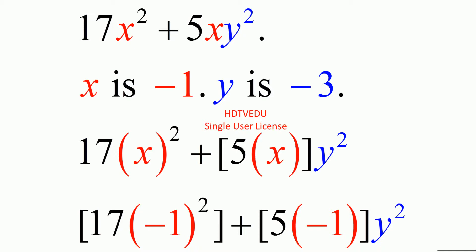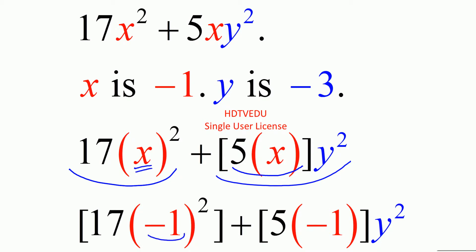We are told that x is negative 1 and y is negative 3, so we have 17x squared plus 5xy squared. What is x? X is negative 1. What is negative 1 to the power of 2? Positive 1. So 17 times positive 1 gives us 17. Now looking at 5xy squared, when we substitute x equals negative 1, what is 5 times negative 1?